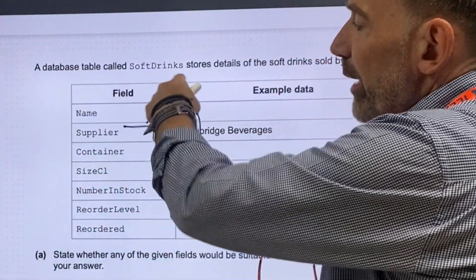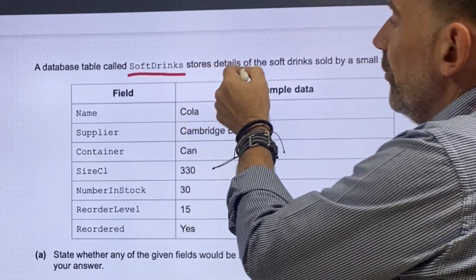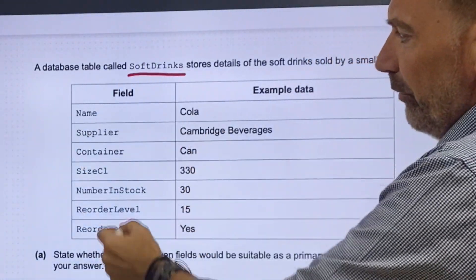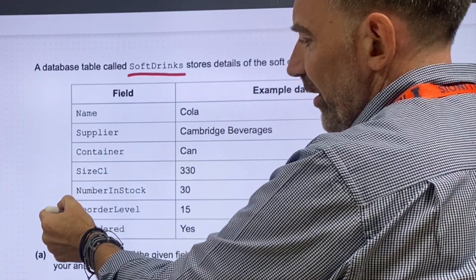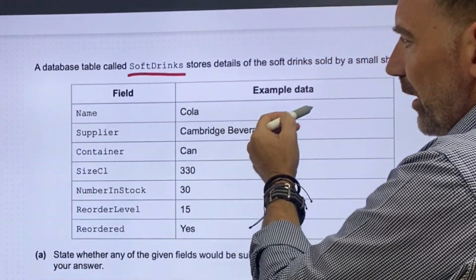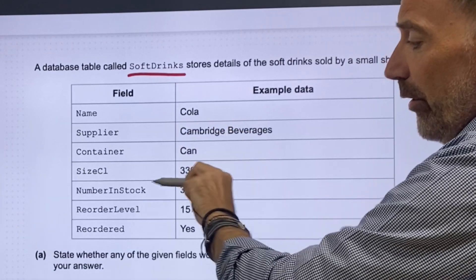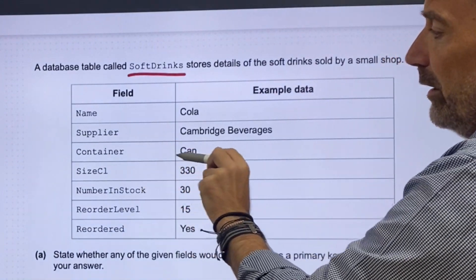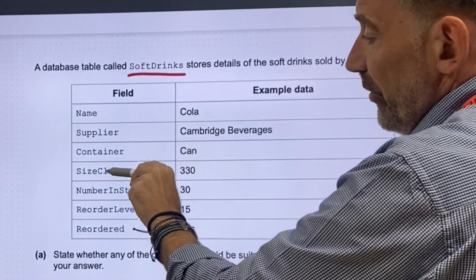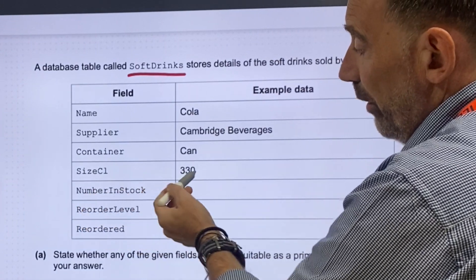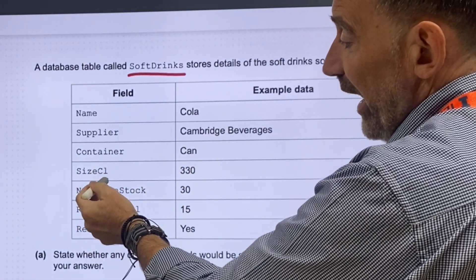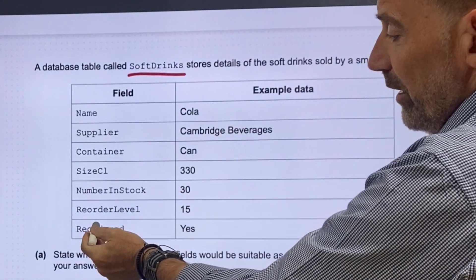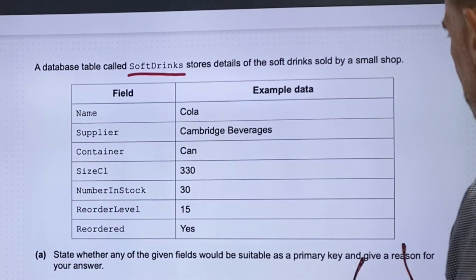Okay, next question. A database table called soft drinks stores details of the soft drinks sold by a small shop. We've got seven items in the fields, and then we've got examples of the data that will be stored in those particular fields: Cola, Cambridge Beverages as our supplier, container is a can, size C1 — I'm assuming that's in centilitres — number in stock 30, reorder level 15, and reordered: yes.